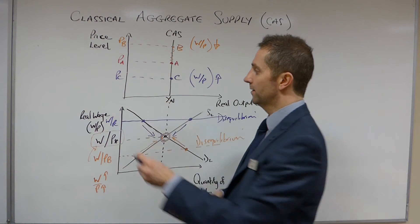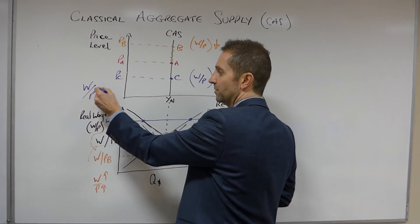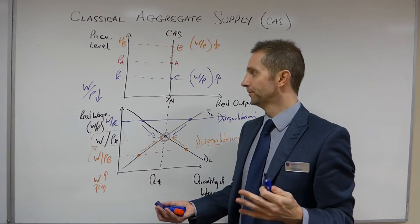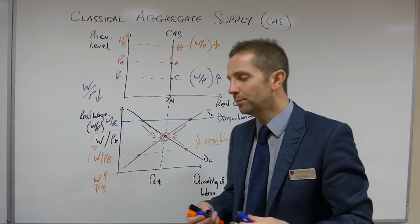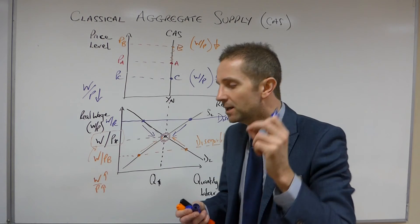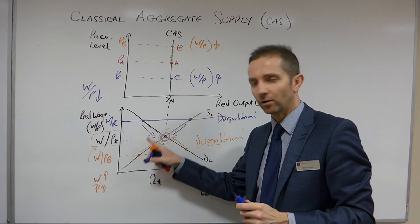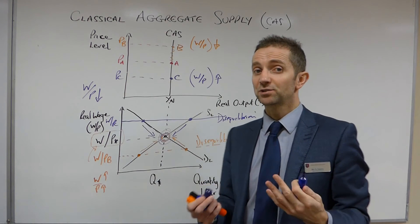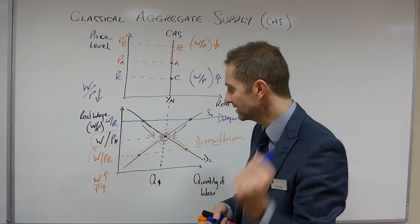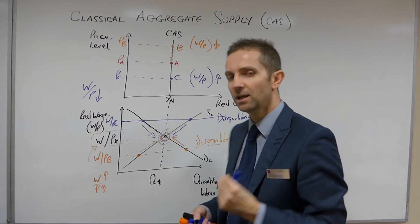We already know that the price level has fallen, so in terms of our real wage the bottom line has fallen. In order to cure this disequilibrium in the labour market, the money wage also needs to fall by the same proportion, and that will re-establish equilibrium at W/P* and Q*. Classics say that this will take place instantaneously — this notion of instantaneous adjustment is very important.